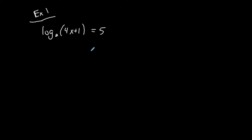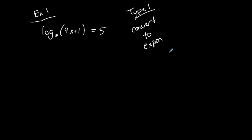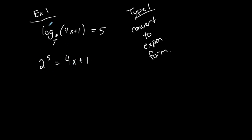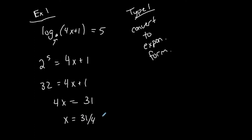Here's a Type 1 logarithmic equation: a single log on the left and a single constant number on the right, with no coefficient in front of the log. To solve Type 1 logarithmic equations, we convert to exponential form — take the base of the log, raise it to that exponent, and set it equal to the argument. So the base raised to 5 equals 4x plus 1. Two to the fifth is 32, so 32 equals 4x plus 1, giving 4x equals 31, so x equals 31 over 4.